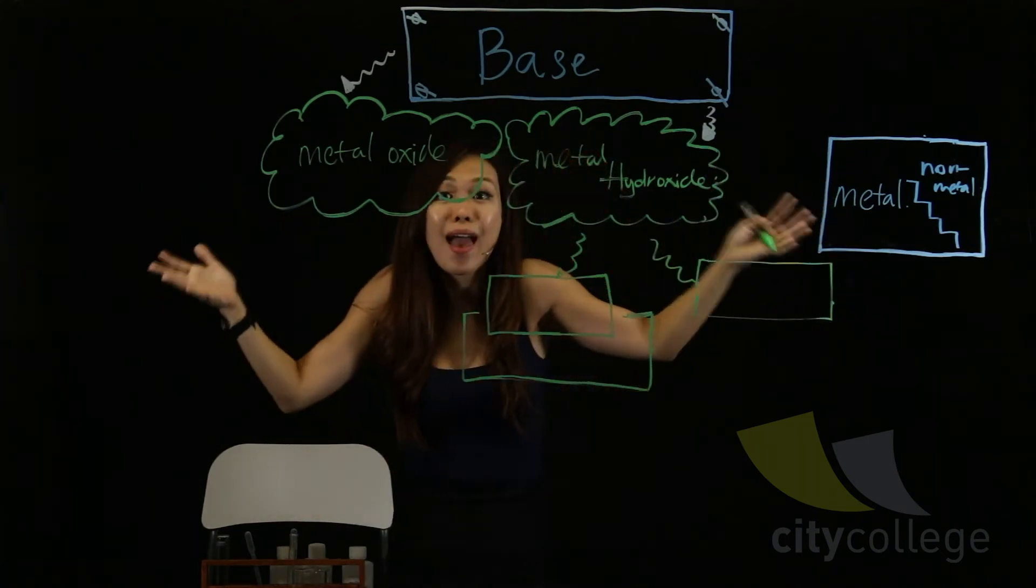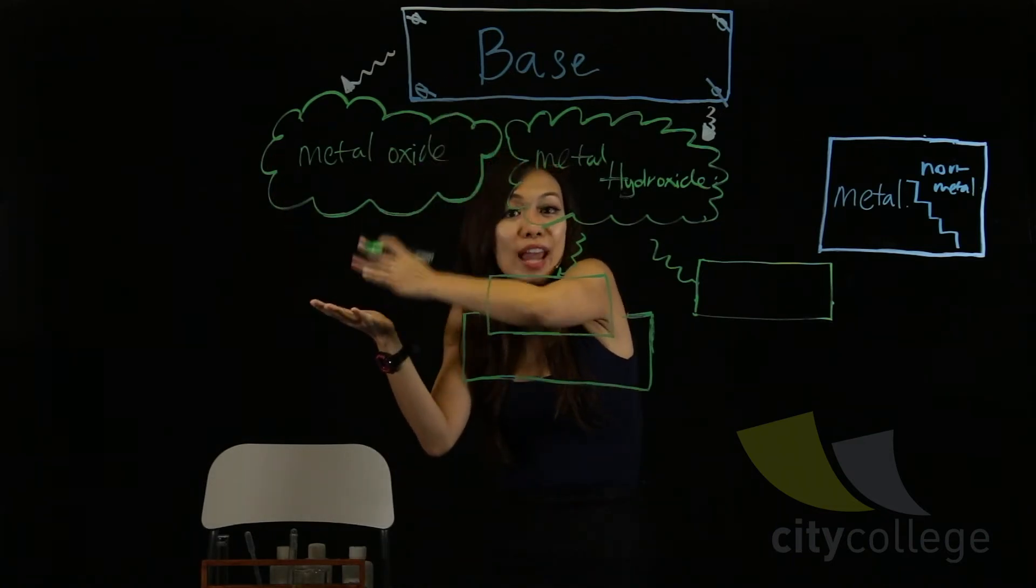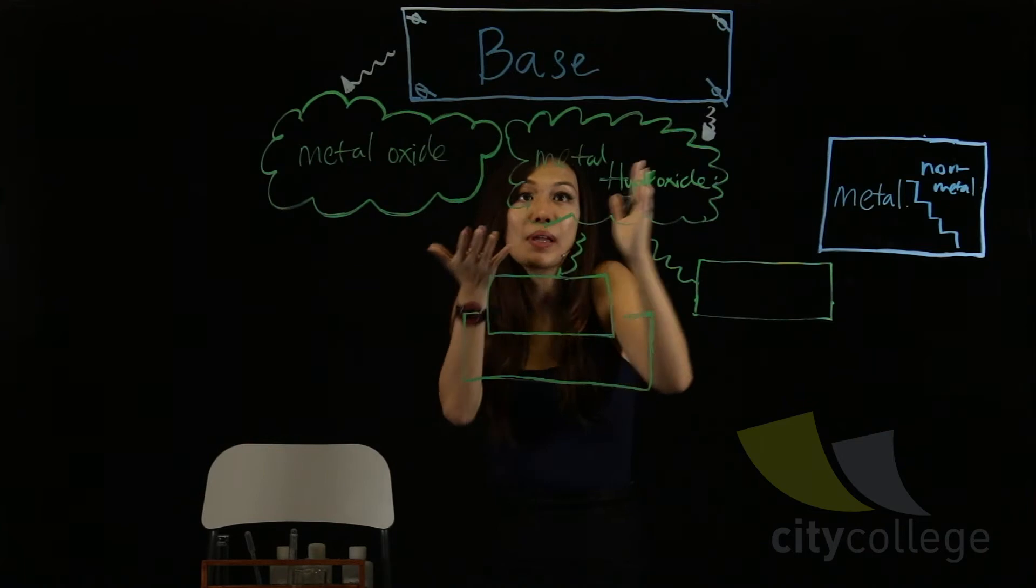So, metal, when exposed to air, they will form a layer of oxide, metal oxide. And when metal oxide reacts in water, they will become metal hydroxide.